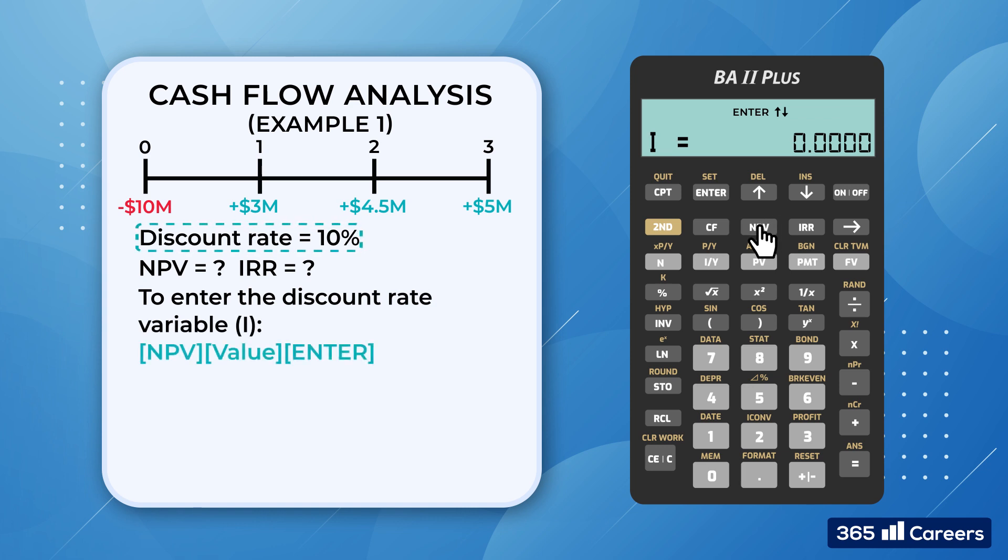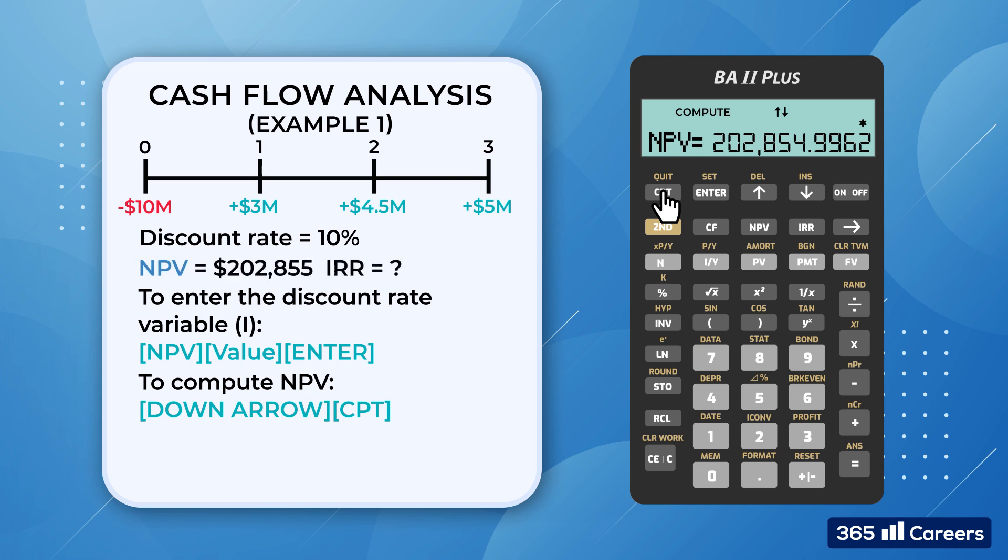Once we do that, we'll be asked for I, the discount rate in our case. We input 10, followed by enter, and then we scroll down. The only thing we need to do is press Compute to obtain the project's NPV, which equals $202,855, rounded to the nearest integer.